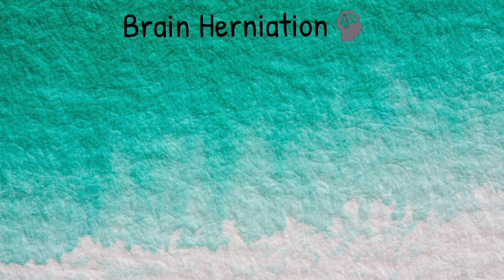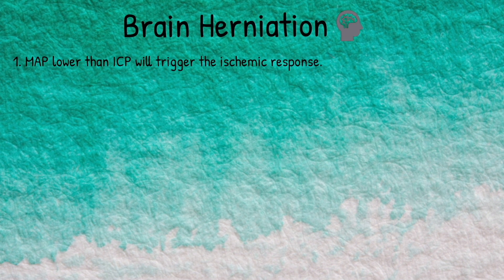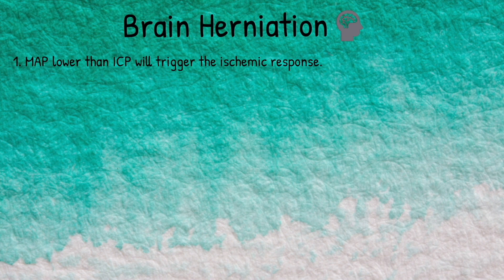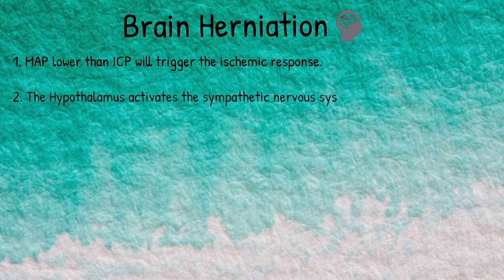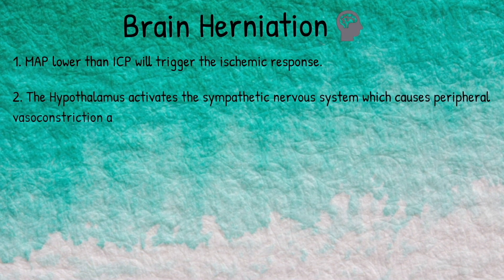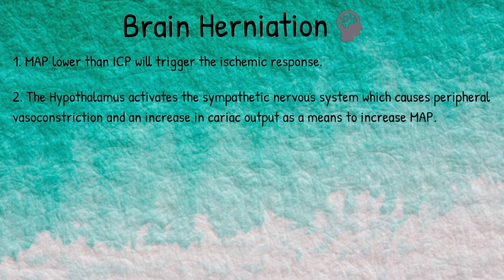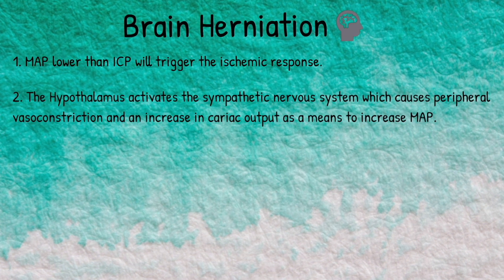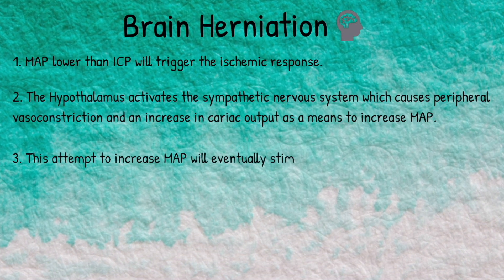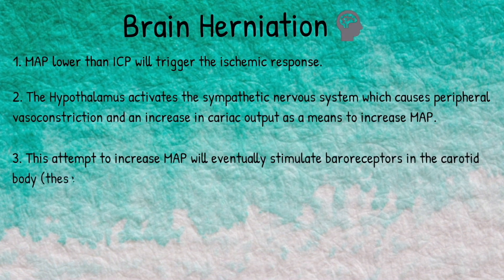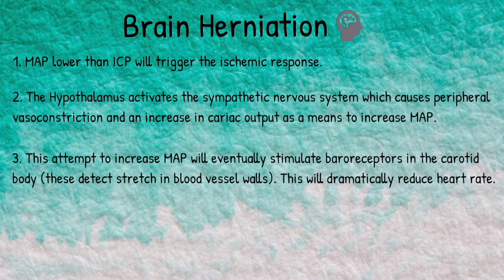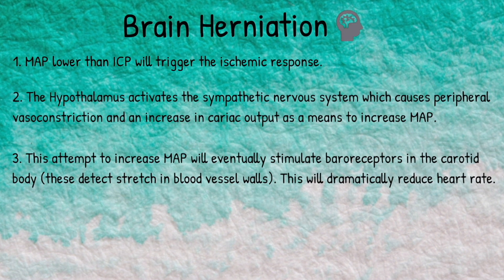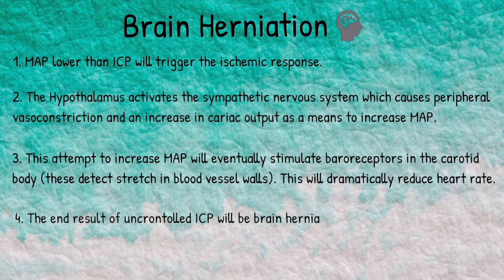Now we're ready to move on to talk about brain herniations themselves. When the mean arterial pressure is lower than that of the intracranial pressure, this will trigger the central nervous system ischemic response mentioned earlier. The hypothalamus activates the sympathetic nervous system, which causes peripheral vasoconstriction and an increase in cardiac output as a means to increase the mean arterial pressure. This attempt to increase the mean arterial pressure will eventually stimulate the baroreceptors located in the carotid body, since these detect stretch in blood vessel walls, and this will consequently lead to a dramatic reduction in heart rate.